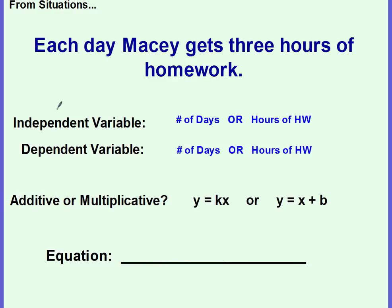Let's do another one. Each day, Macy gets three hours of homework. So what are we comparing? We're comparing the number of days and the amount of homework that she gets. Which one is independent? The three hours, the hours of homework, or the number of days? The number of days is your independent. You need to know how many days of homework. If you know each day is three hours, you don't know the total number of hours unless you know how many days of homework she has. So the number of days is your independent variable, your X. Your dependent variable would then be your hours of homework.